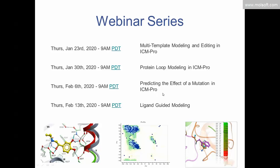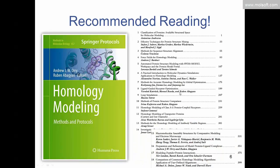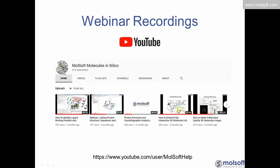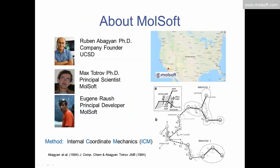A quick shameless plug: a couple of years back, Ruben Abagyan and I edited a book on homology modeling covering alignments, force fields, ligand-guided modeling, and how to analyze your model. I can send PDFs of any chapters if you email me. All the webinars are saved on YouTube. Regarding Molsoft: we're located in San Diego, California. Our company founders are Ruben Abagyan and Max Totrov, our principal scientist, and Eugene Rauch is our principal developer.